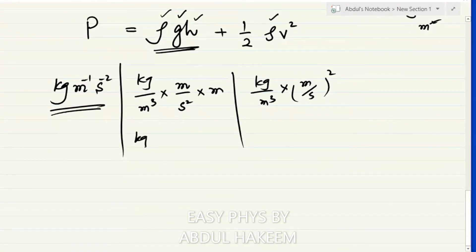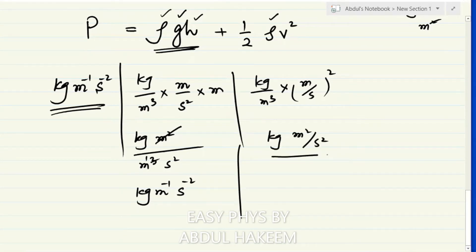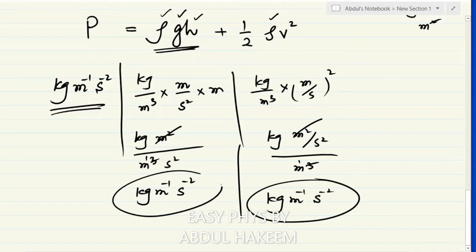Simplifying ½ρv²: kg/m³ × m²/s² = kg·m²/(m³·s²). The m² cancels leaving one m in the denominator, giving kg·m⁻¹·s⁻². All three terms — pressure, ρgh, and ½ρv² — have the same unit, kg·m⁻¹·s⁻², so this equation is homogeneous.